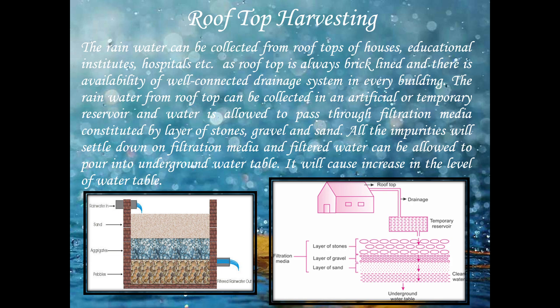This water is allowed to pass through a filtration media, which is constituted by three layers: a layer of stones, gravel, and sand. All impurities in the rainwater will settle down on the filtration media. This filtered water is then allowed to pour into the underground water table, which helps to recharge it, as shown in the figure.